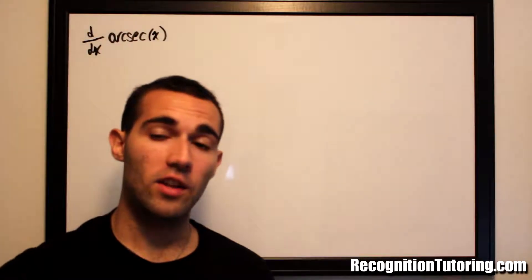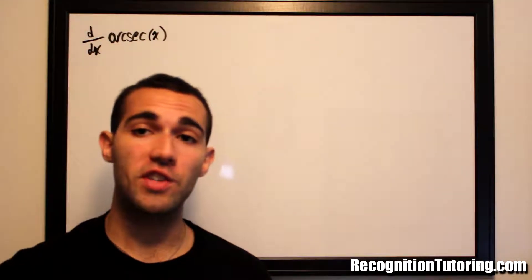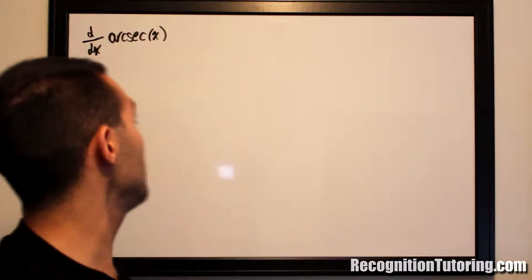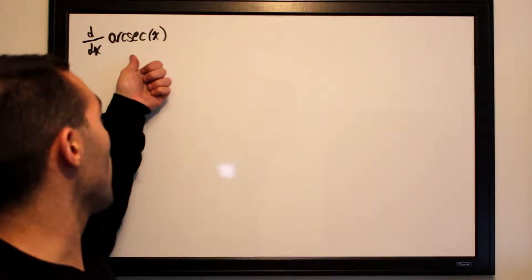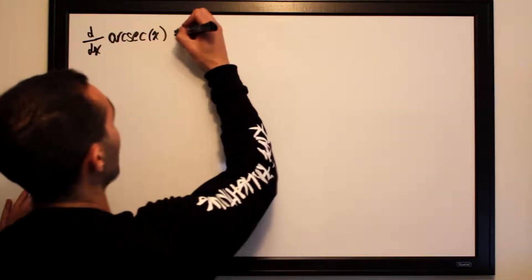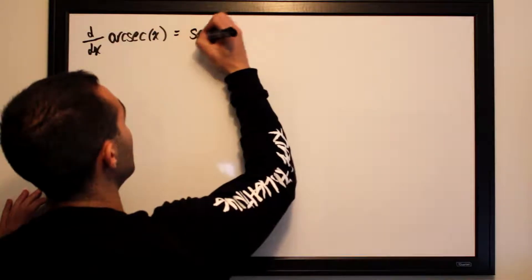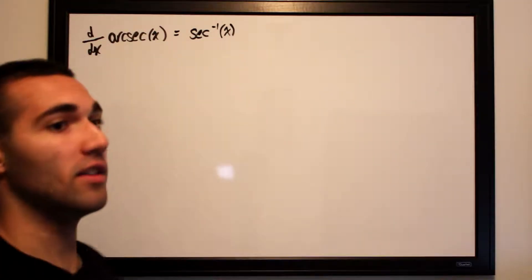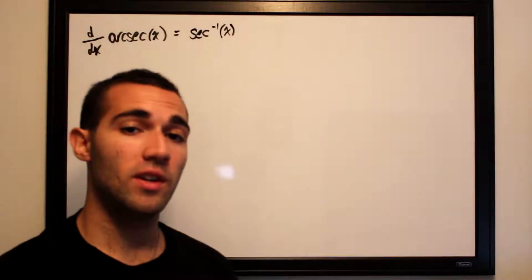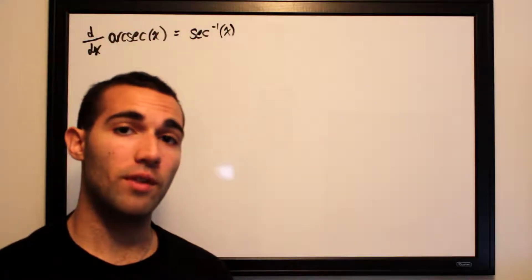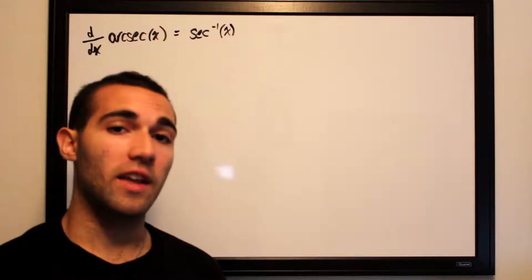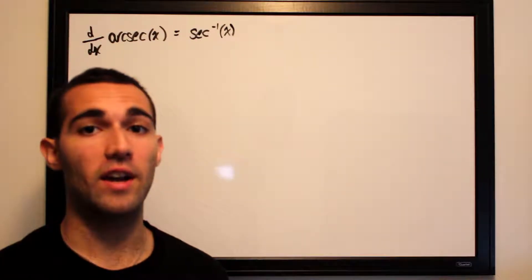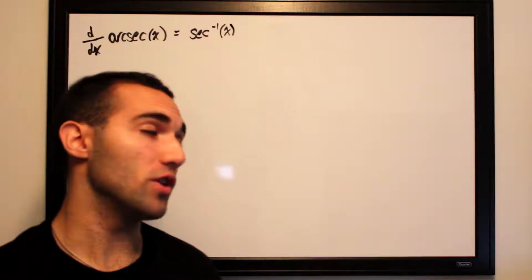What we'll be doing now is taking the derivative of arc secant of x using a method called implicit differentiation. We want d/dx of arc secant of x, otherwise known as secant inverse of x. This is normally provided in the tables of common derivatives you'll need memorized in a calculus course, but here's the derivation if you happen to forget it or are just curious.